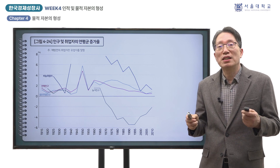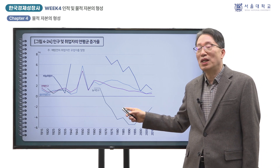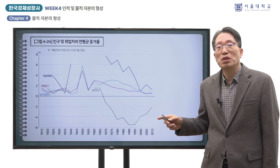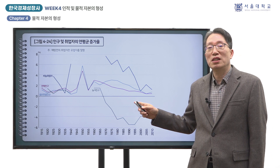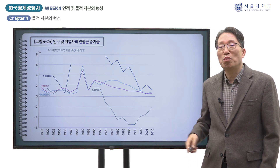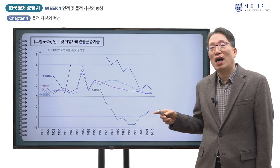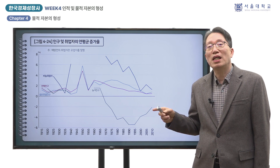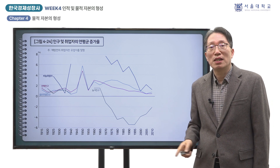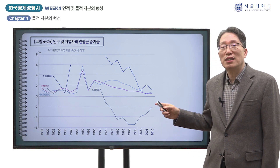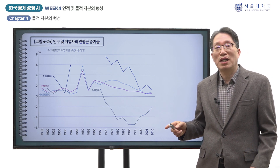해방 전에는 비농업 취업자 증가율이 낮지 않았지만 농가 인구의 감소를 가져올 정도는 아니었습니다. 해방 직후부터 50년대에는 신뢰할 만한 취업자 통계가 없지만, 1960년대 초에 도시 가구의 실업률이 매우 높았던 데에서 알 수 있듯이 비농업 취업자 증가는 미미했을 것입니다. 이 시기 생산연령 인구가 급증했음에도 불구하고 일자리를 찾지 못해 순저축자가 되지 못한 경우가 많았습니다. 이에 대해 고도성장기에는 늘어난 생산 인구가 고용될 기회가 많았고 순저축자가 될 수 있었다는 점이 이전 시기와 다른 점입니다.